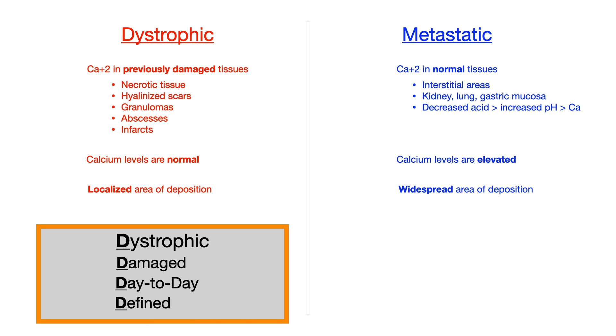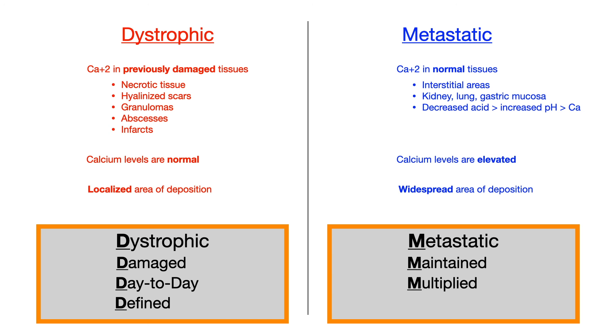And if we compare that to metastatic calcification, in metastatic calcification, that's going to occur in maintained tissues, meaning otherwise normal. And both your calcium levels and your area of deposition are going to be multiplied, i.e. multiplied calcium levels are elevated, and multiplied areas of deposition are widespread. So dystrophic equals damaged, day-to-day, and defined; metastatic equals well-maintained tissues with multiplied calcium levels and multiplied areas of deposition. That is the difference between dystrophic and metastatic calcification.